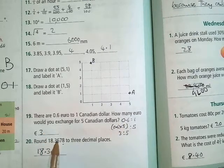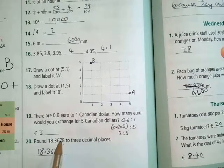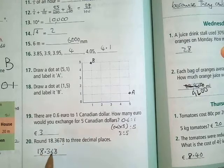Question 20: round 18.3678 to three decimal places. You look at that fourth decimal place, that's 8. So that rounds, 7 rounds up to an 8. So it's 18.368.